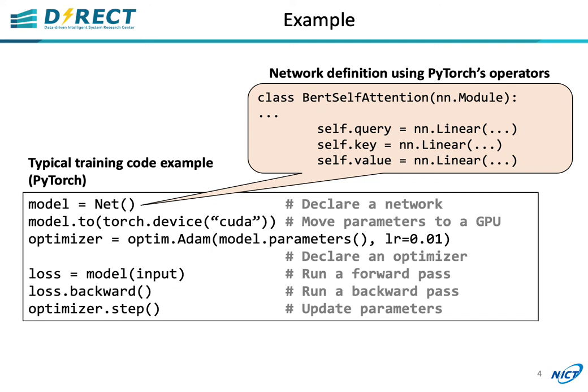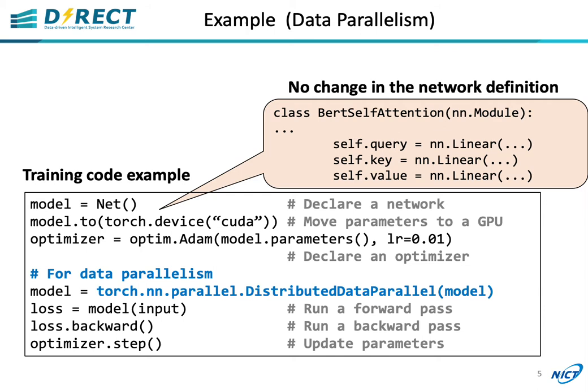To explain the usage of RANK, let me begin with the typical training code. In this code, we have the declarations of a model and an optimizer, forward and backward passes, and a parameter update. When you use data parallelism, you just need to insert one line that wraps the model by a distributed data parallel module.